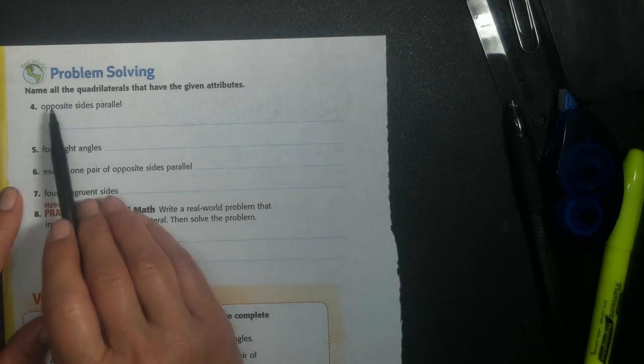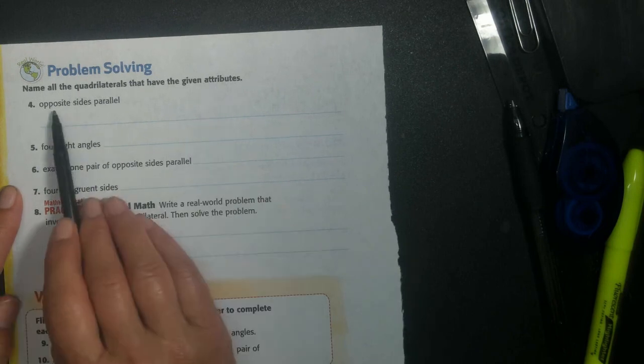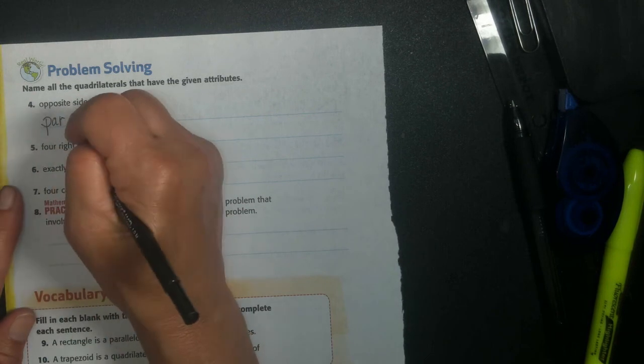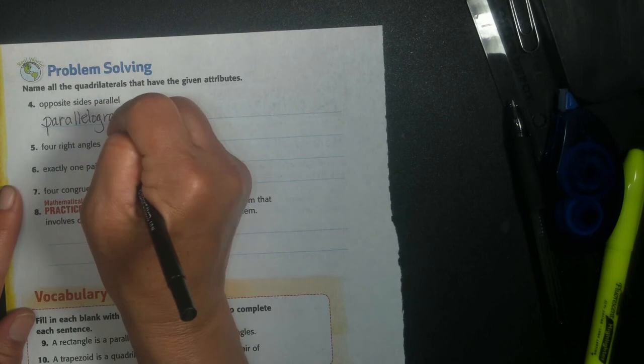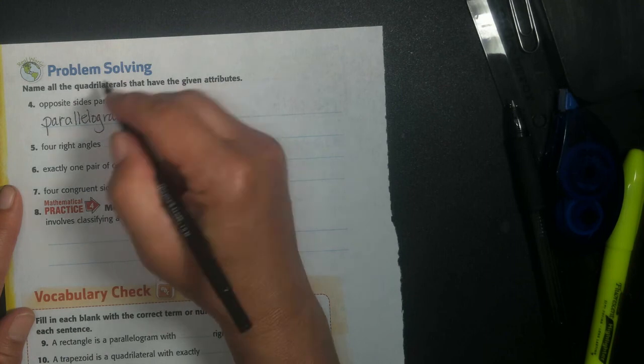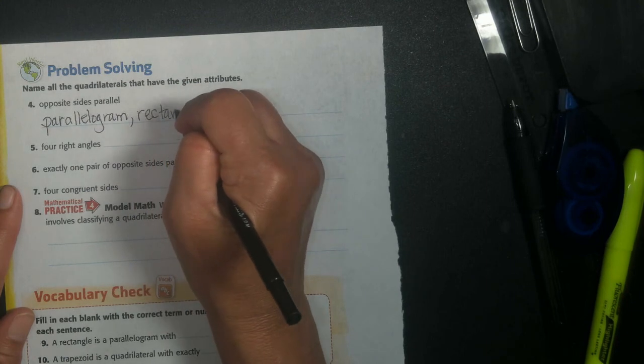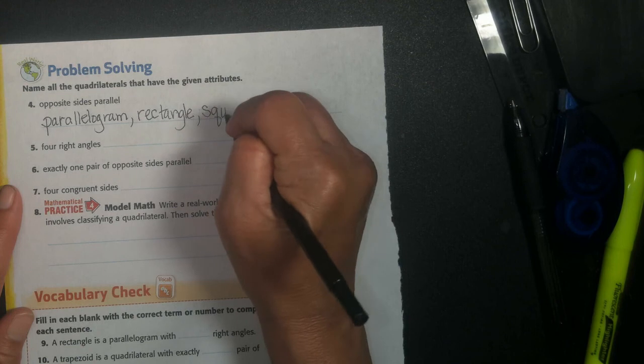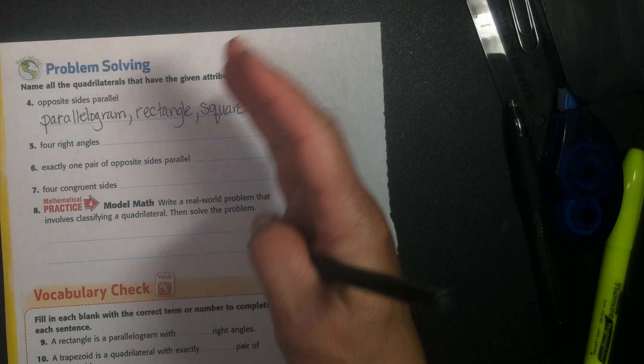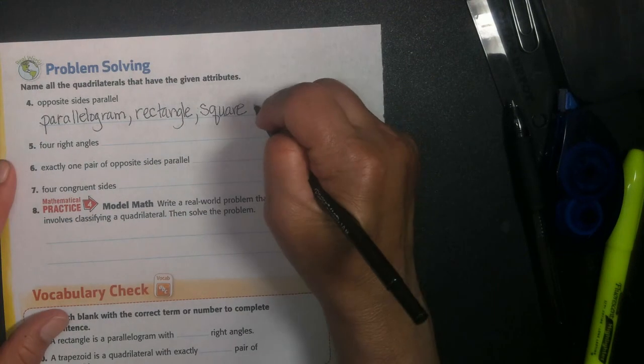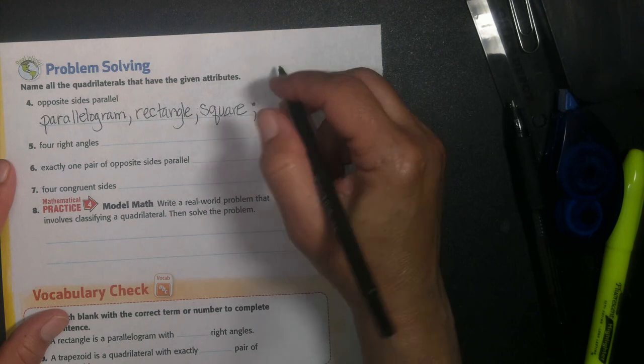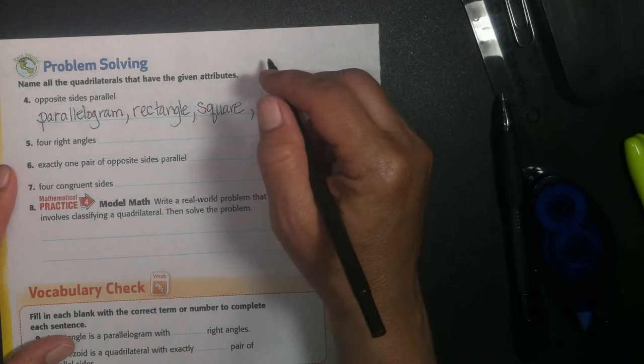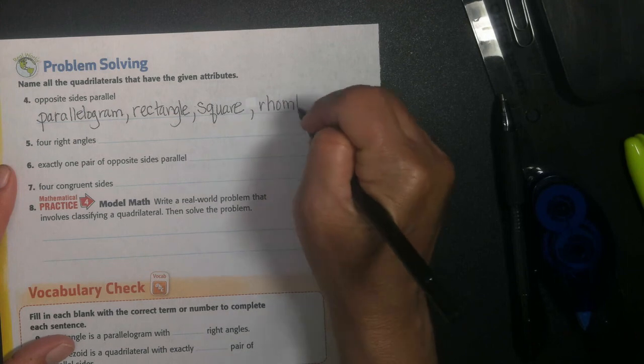Name all the quadrilaterals that have the given attributes. Opposite sides are parallel. A parallelogram, right? That's the whole definition of a parallelogram. All opposite sides are parallel. A rectangle, right? Opposite sides are parallel. And a square. Opposite sides are parallel. And a rhombus, right? The opposite sides are parallel. Opposite sides are parallel. I don't need the semicolon there. I was just doing a list, so I don't need a semicolon there. Rhombus is the one I'm missing, not square. There. All right.